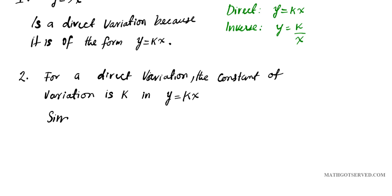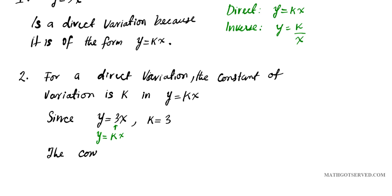Since we have the equation y equals 3x, what is k? K is the coefficient of x, which is 3. If I put y equals kx underneath, you can see that k is 3, the coefficient of x. So since y equals 3x, k is equal to 3. That means the constant of variation for this direct variation y equals 3x is k equals 3.